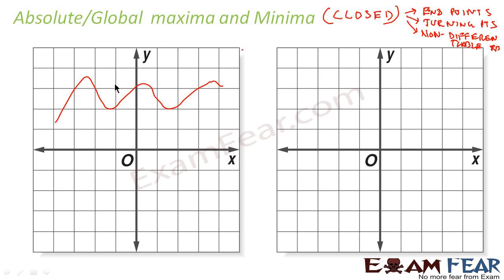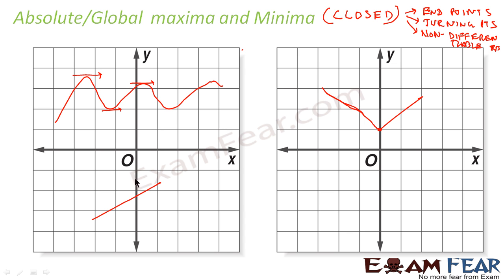For example, you have this kind of function — in this case, the maxima and minima are the turning points. There are scenarios where the function is monotonic, where we don't have turning points; in those cases, the maxima and minima are the endpoints. There are also functions which are non-differentiable at certain points, and you can have maxima and minima at those points as well.